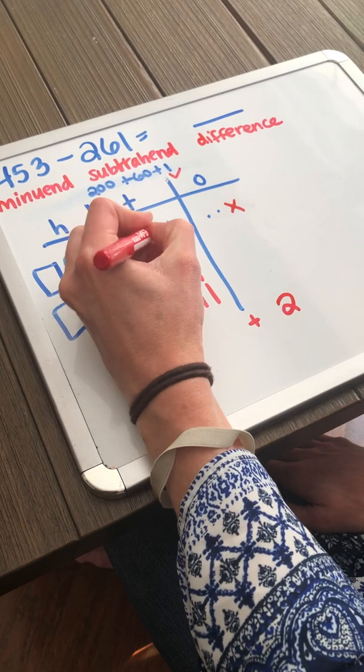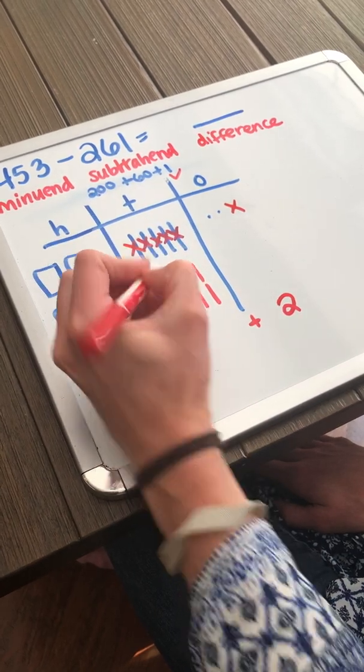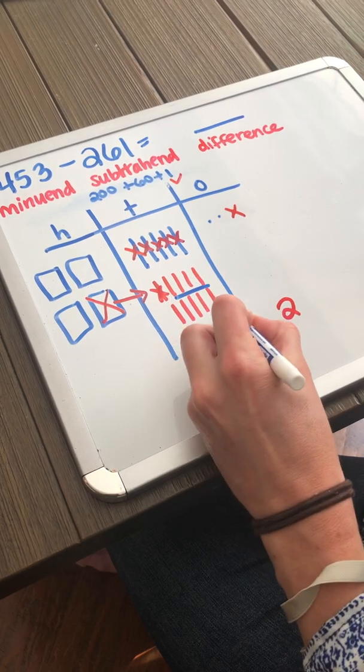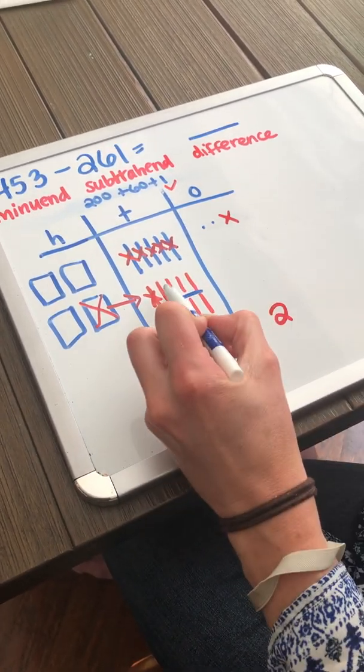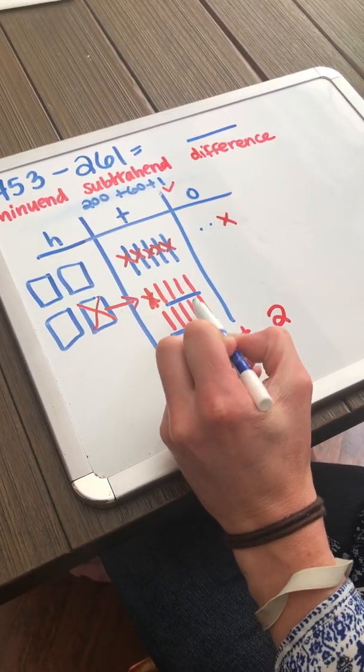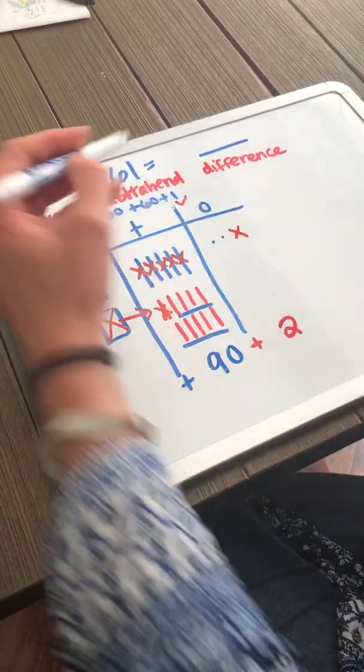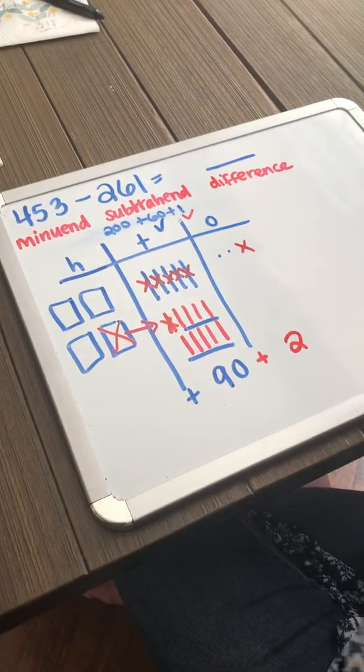And so now I'm going to take away six tens or 60, 10, 20, 30, 40, 50, 60. I am left with nine tens. One, two, three, four, five, six, seven, eight, nine tens. Nine tens is worth 90.